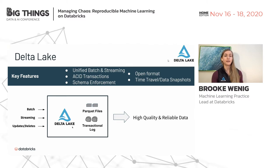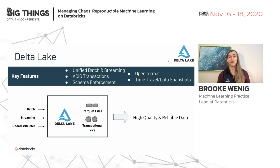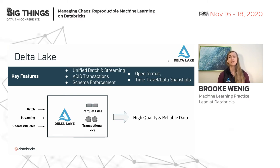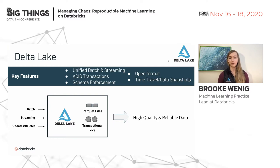With Delta Lake you can unify both batch and streaming — no longer needing different setups for each. It gives you ACID transactions: a write either fully succeeds or it does not. It provides schema enforcement, throwing an error if your schema is incompatible, but also the ability to evolve the schema as an optional command. It's an open format with no lock-in — you can run Delta Lake locally on your laptop, on AWS, Databricks, Azure, wherever you want.